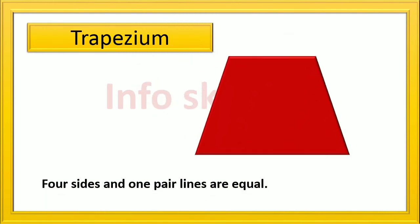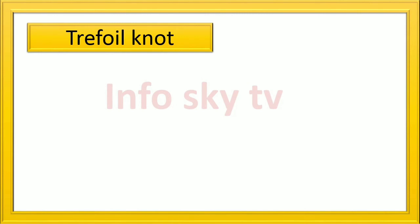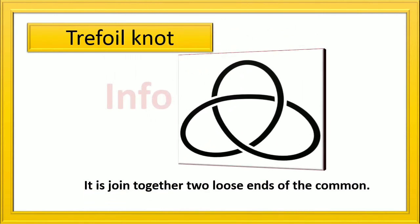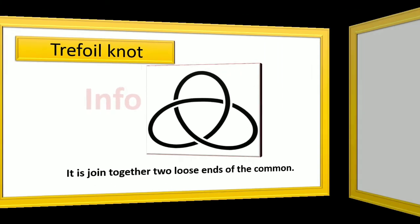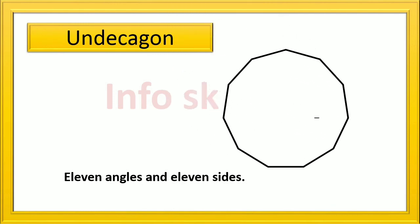Trapezium: 4 sides and 1 pair of lines are equal. Trefoil Knot: it is joined together 2 loose ends of the common. 11 angles and 11 sides.